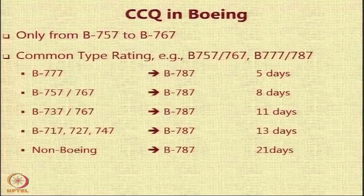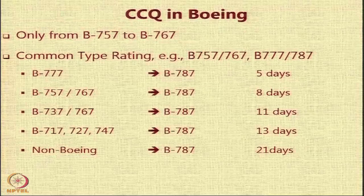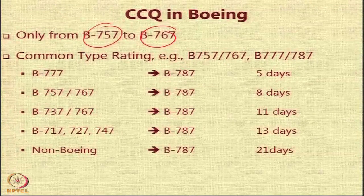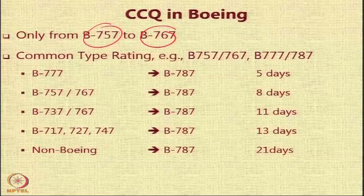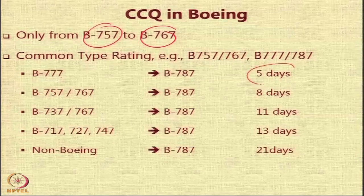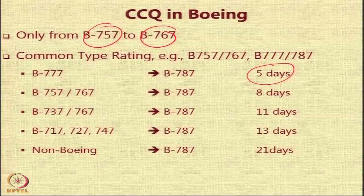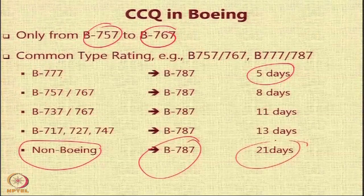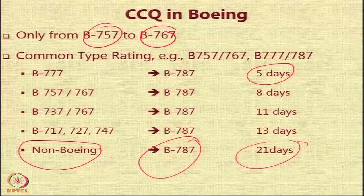Boeing also allows commonality, though it is currently available only between the Boeing 757 and 767. From the 777 to the 787, conversion takes five days. However, converting from a non-Boeing aircraft — essentially an Airbus aircraft — to the 787 requires 21 days of training. So commonality exists in both companies.